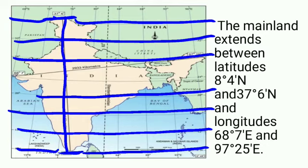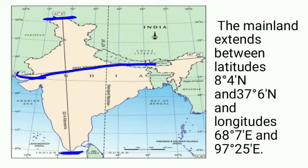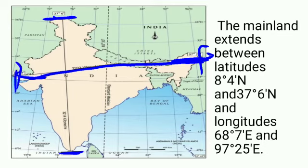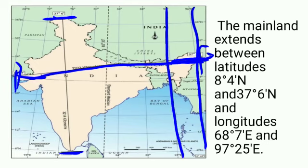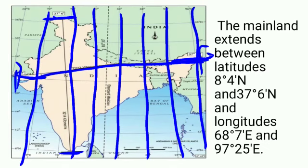Now let us see the longitudinal distance. The longitudinal distance is 68 degrees 7 east to 95 east. We took this extent from these standing lines. The longitudinal distance is 16, and the latitudinal distance is 40.